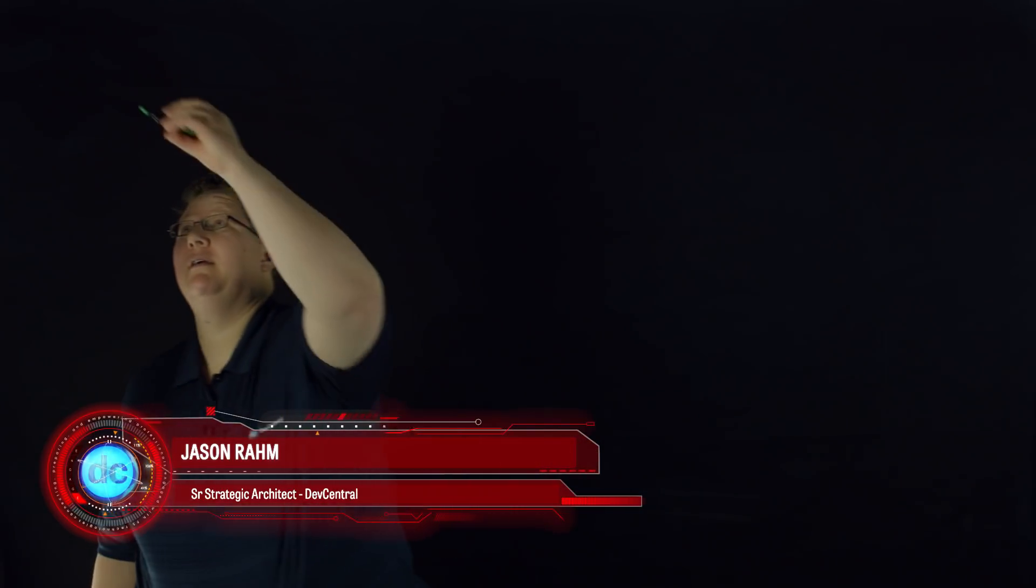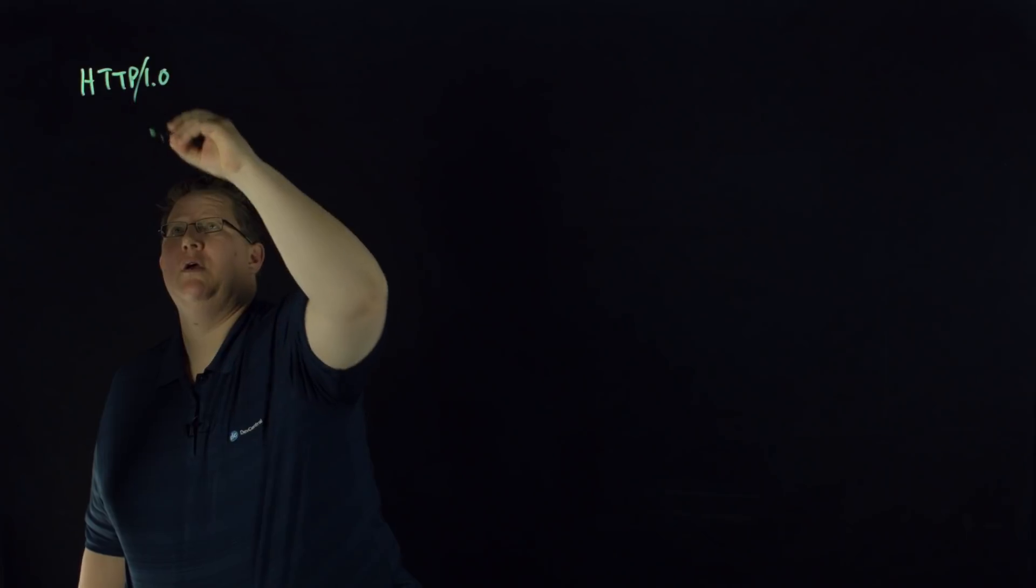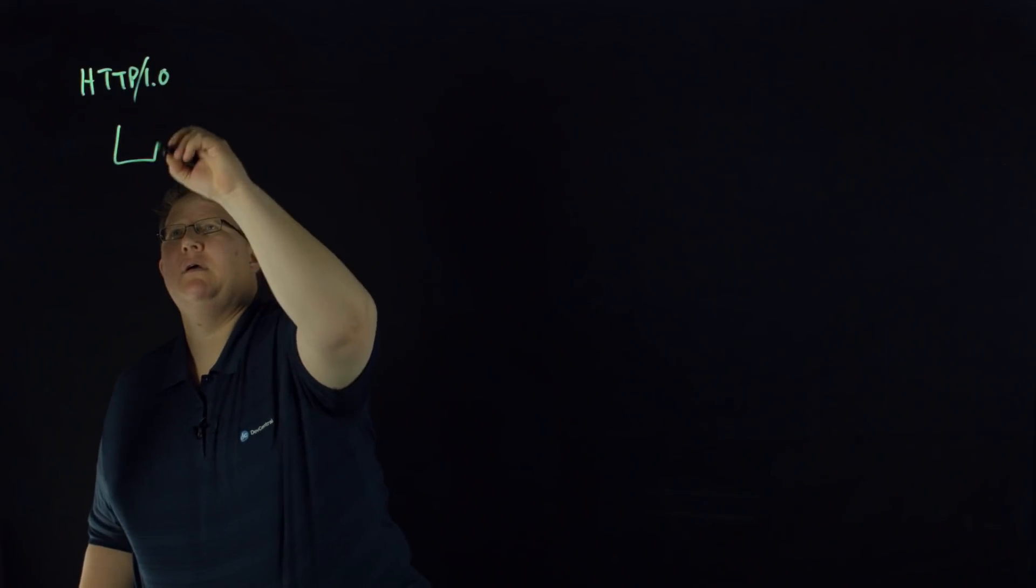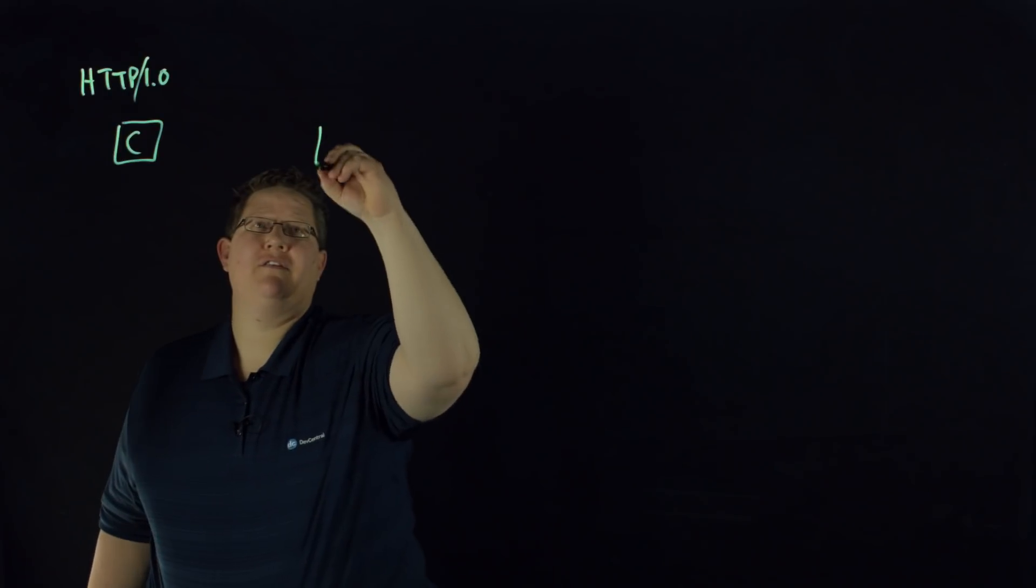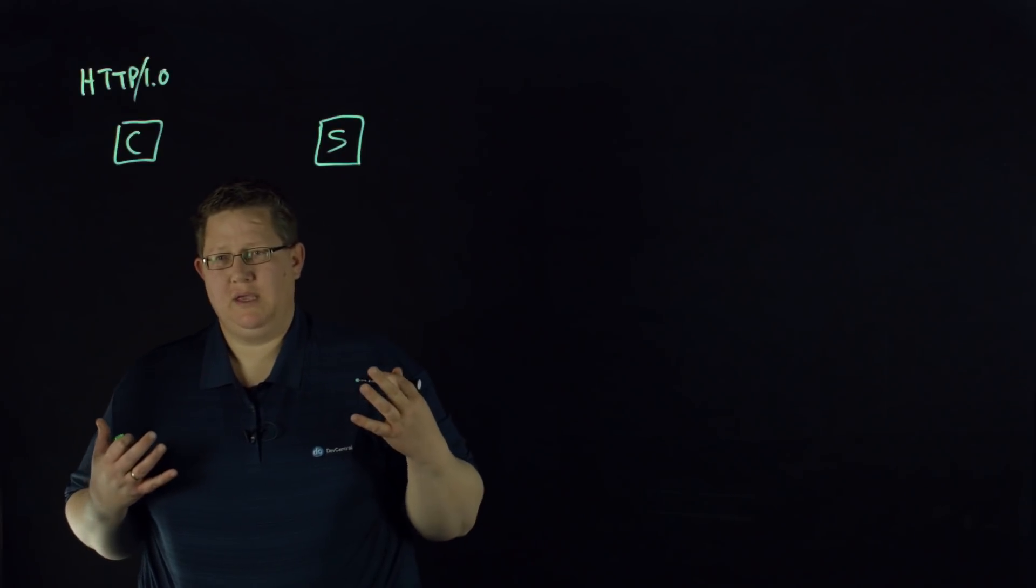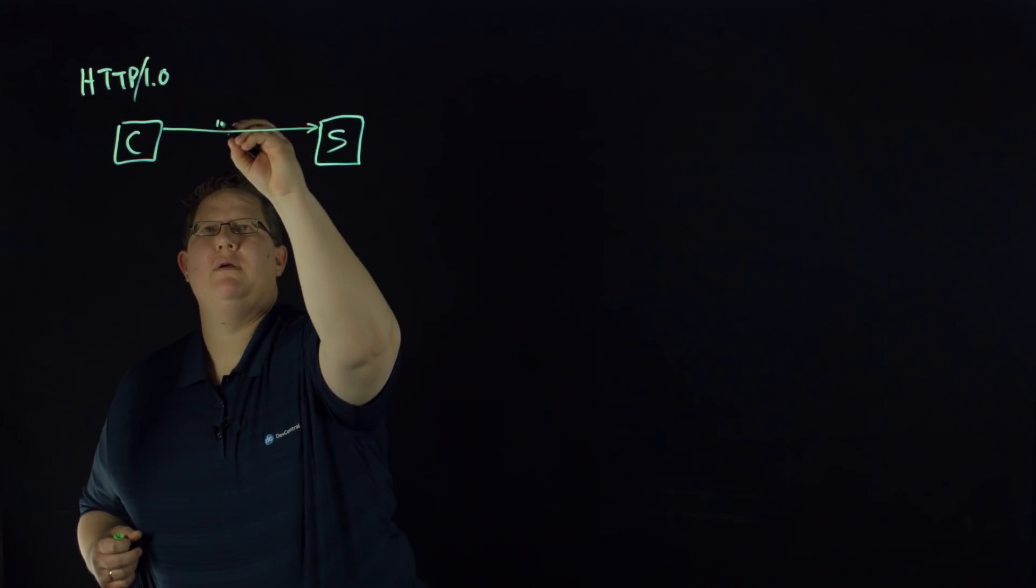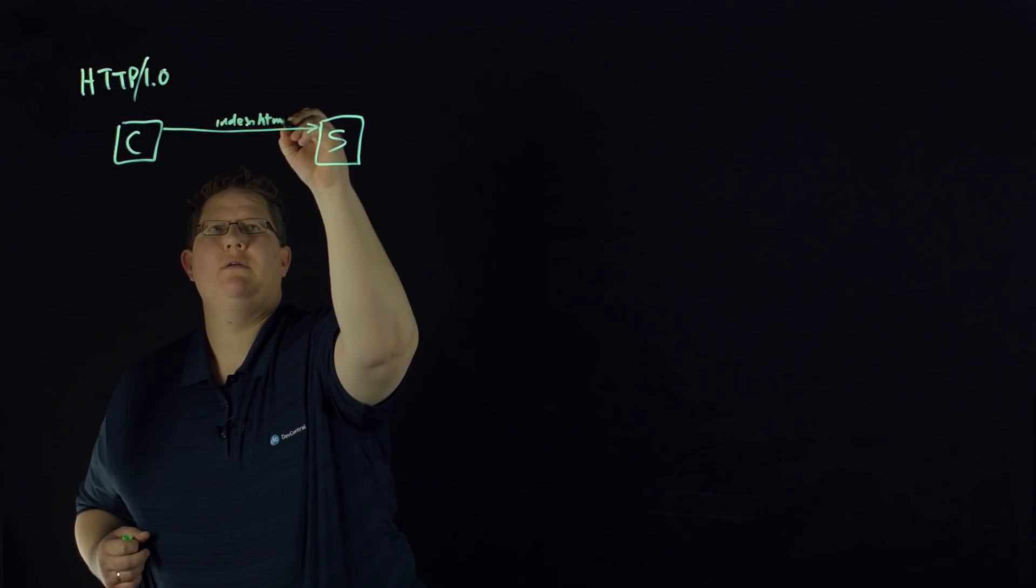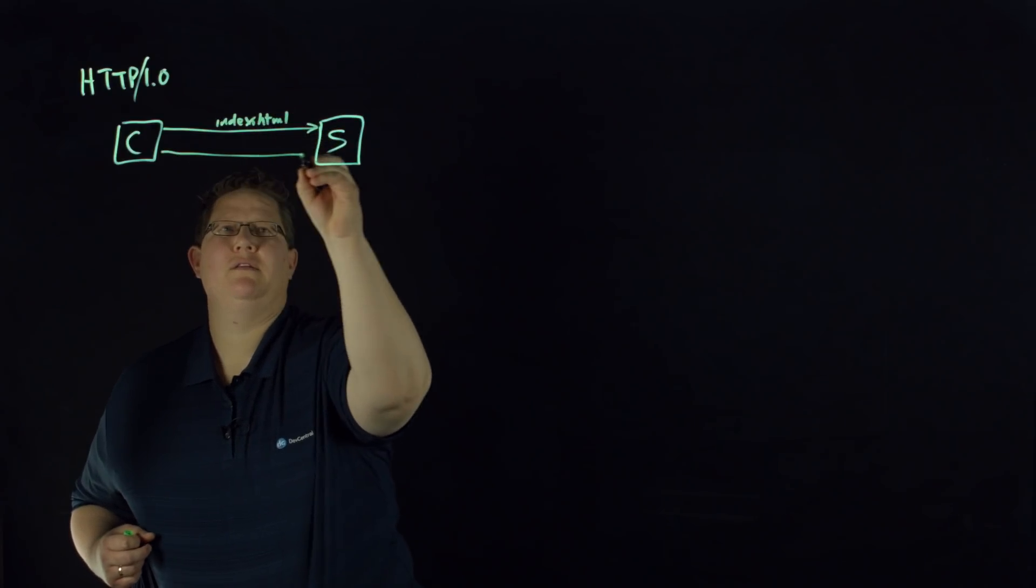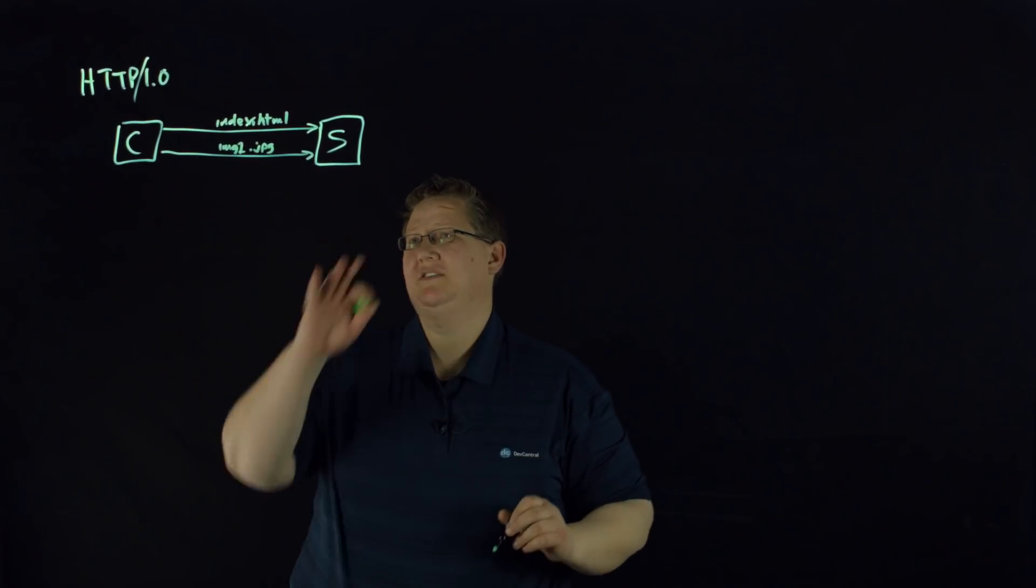If we look at HTTP 1.0, you would have a client and a server. If you wanted to grab a web page with the HTML and an image, the client would make a request for, say, index.html and image1.jpg. Those are independent requests to the server.